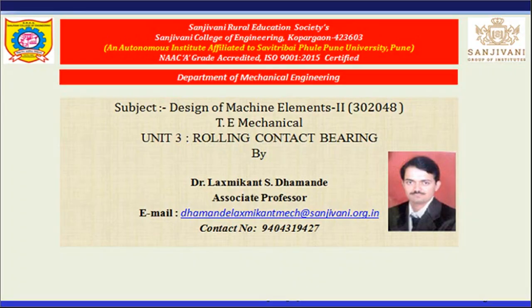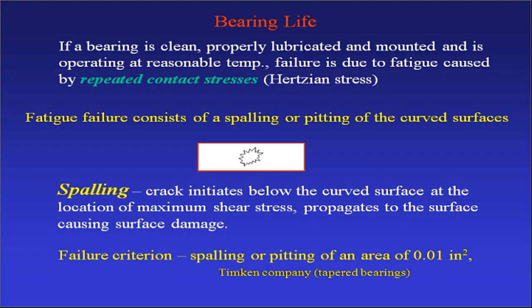In the last presentation, we discussed unit number 3 on rolling element bearings. Initially, we discussed bearing life — how bearing life is specified in terms of the number of revolutions or number of hours the bearing will work before it shows evidence of the first failure.